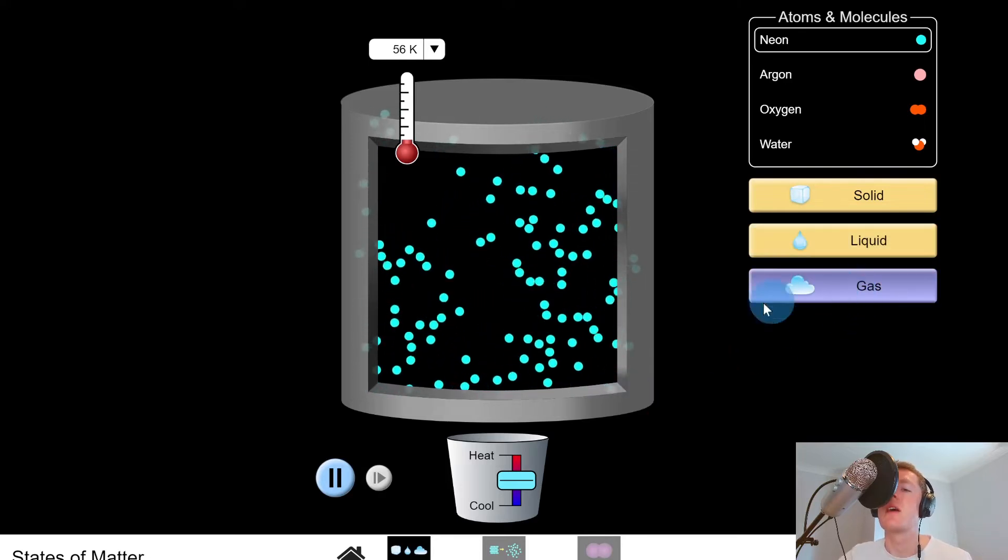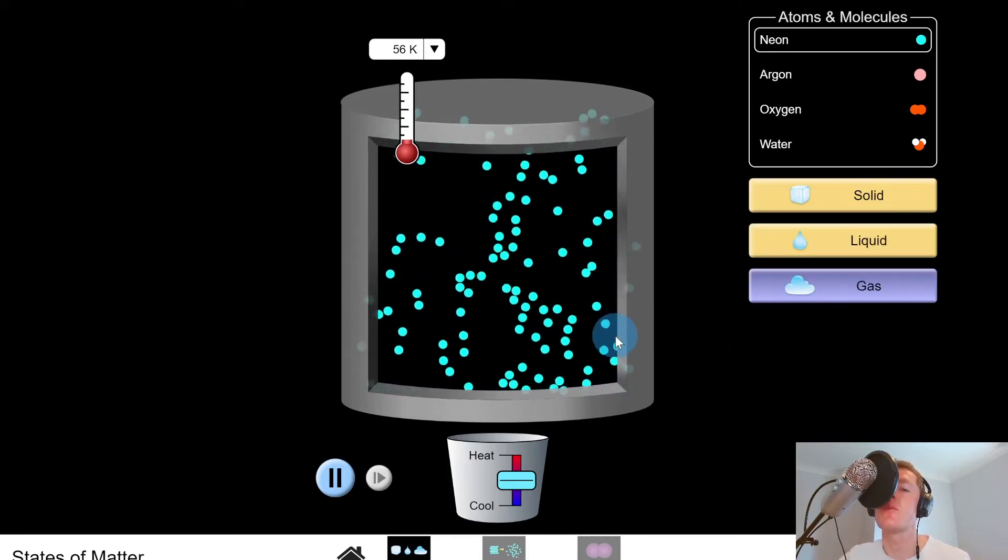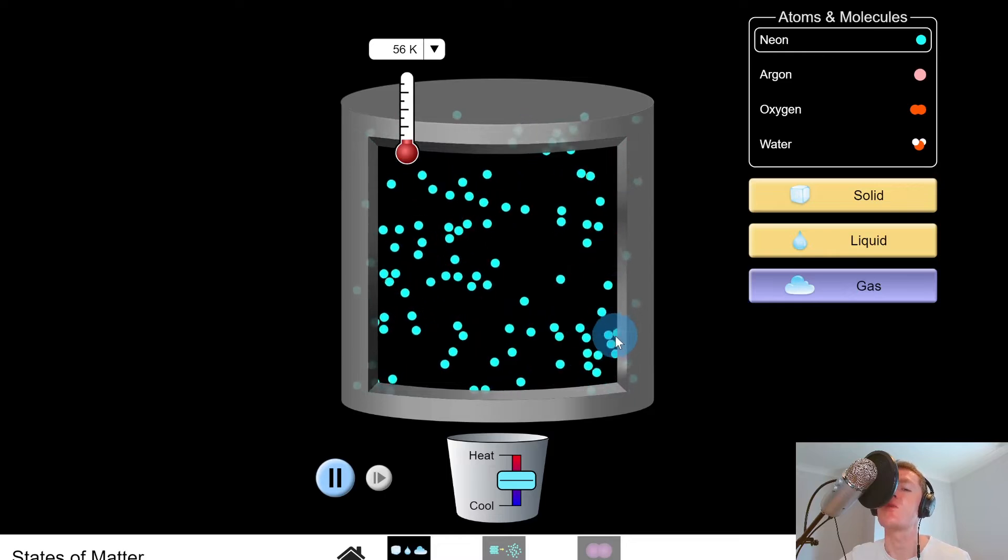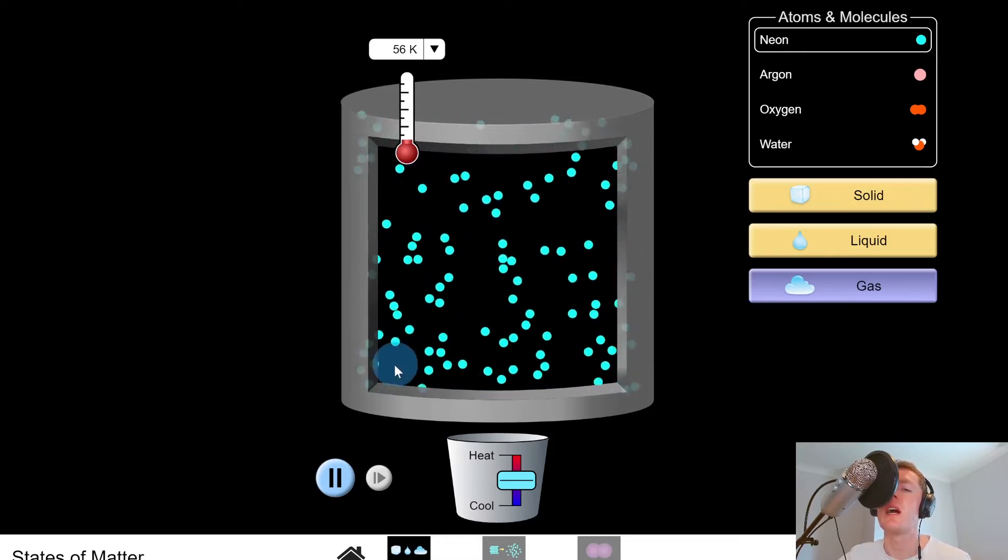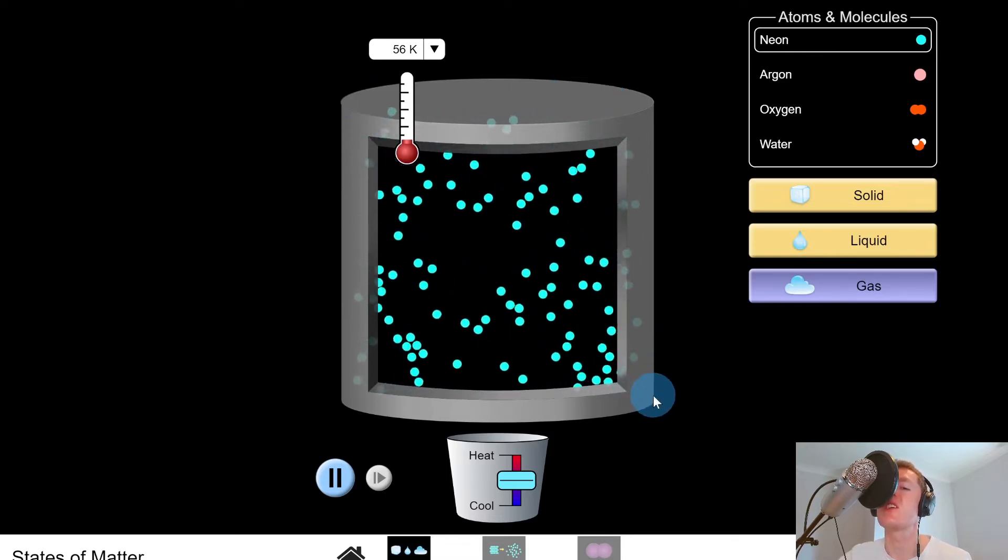And lastly we have the gas where the particles are moving about randomly in all directions with lots of space in between them. Because they're enclosed in this container here, they're hitting off the walls of the container.